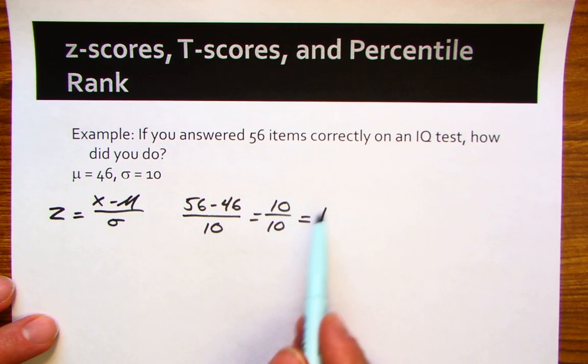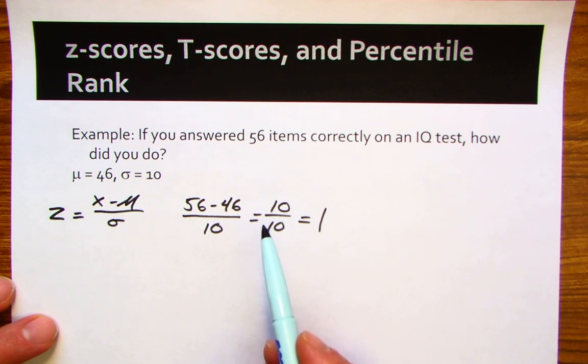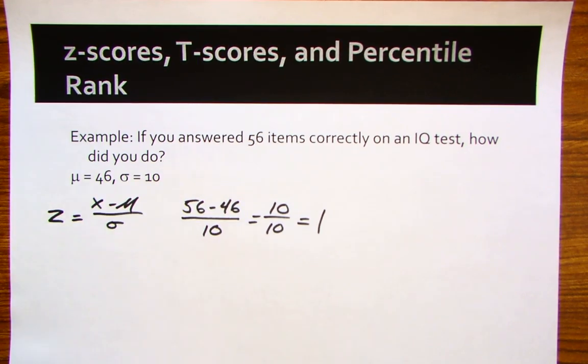You know that this isn't how your score would be reported to you. The real reason why is purely psychological. People can't handle being told that they got a 1 on an IQ test. When actually a z-score of 1 is a pretty good score, but we can't handle that psychologically.